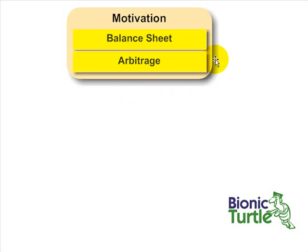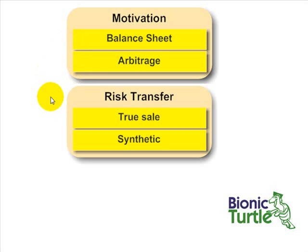In terms of the key perspectives, the first is the motivation. What motivates the construct of the CDO? Is it a balance sheet CDO — that is, is a bank trying to get a portfolio of loans or bonds off its balance sheet? Or is it motivated by yield, the seeking of extra yield by investors? The next key perspective is risk transfer. Is credit risk transferred with a true sale of assets, or is it synthetically transferred with credit default swaps?